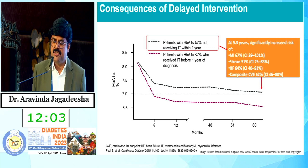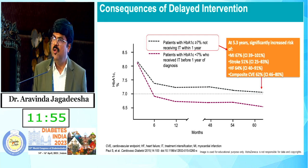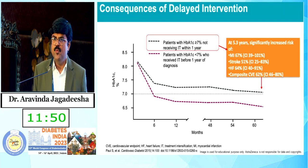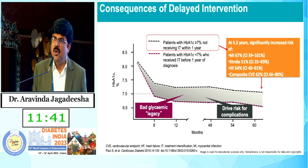What are the consequences of delayed intervention? At 5.3 years there will be an increased risk of MI by 67 percent, stroke by 51 percent, heart failure by 64 percent, and composite CV outcomes by 62 percent. We need to reduce these events by being aggressive from the beginning.